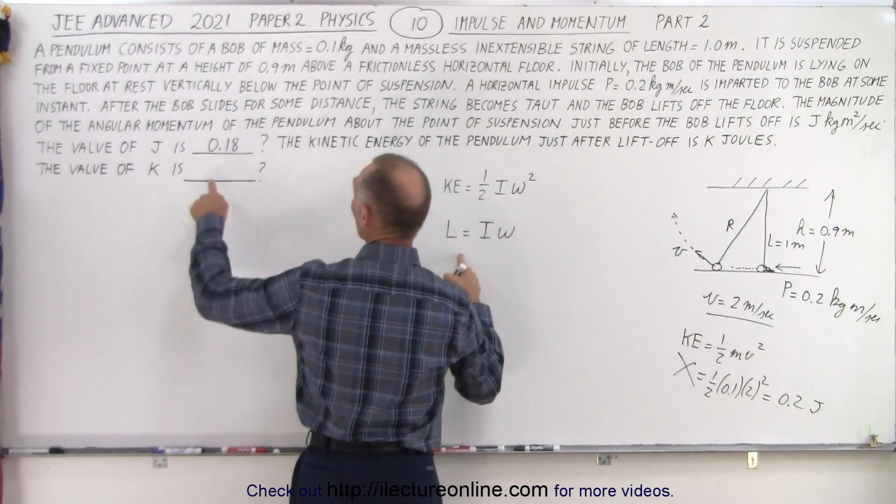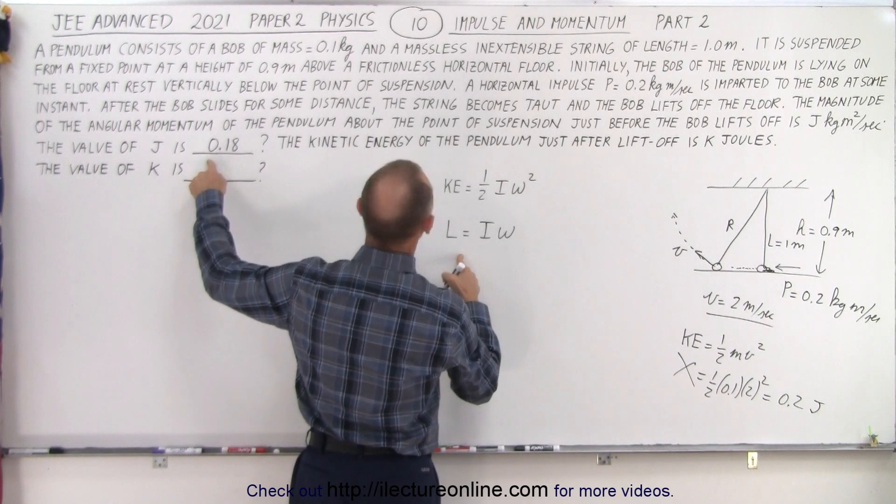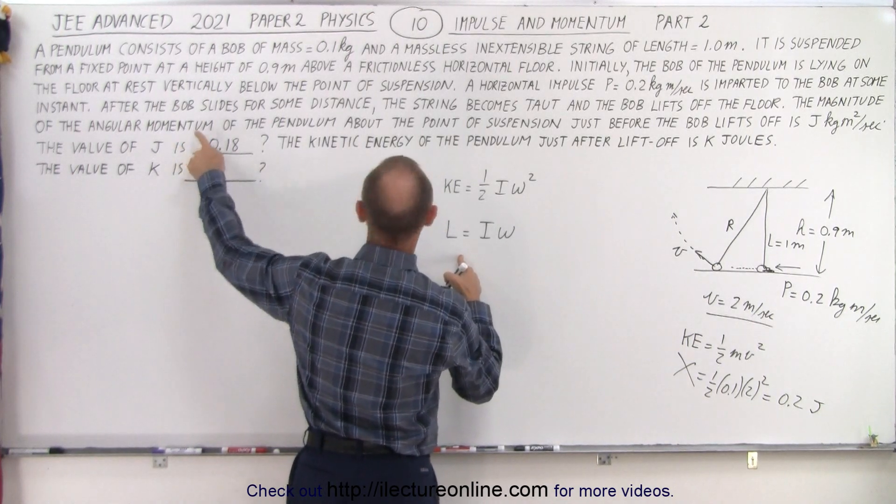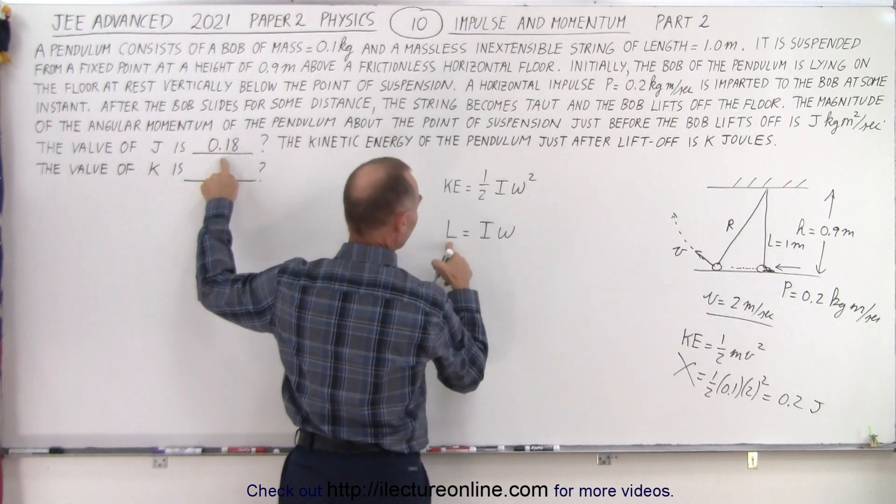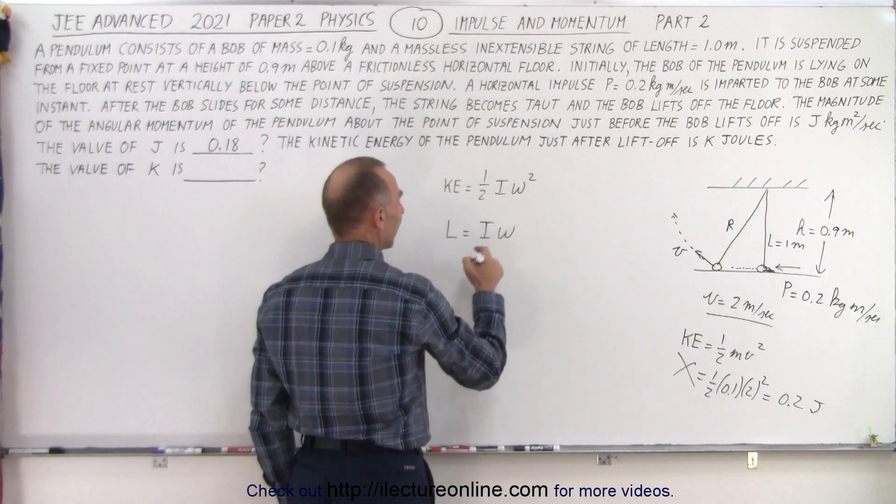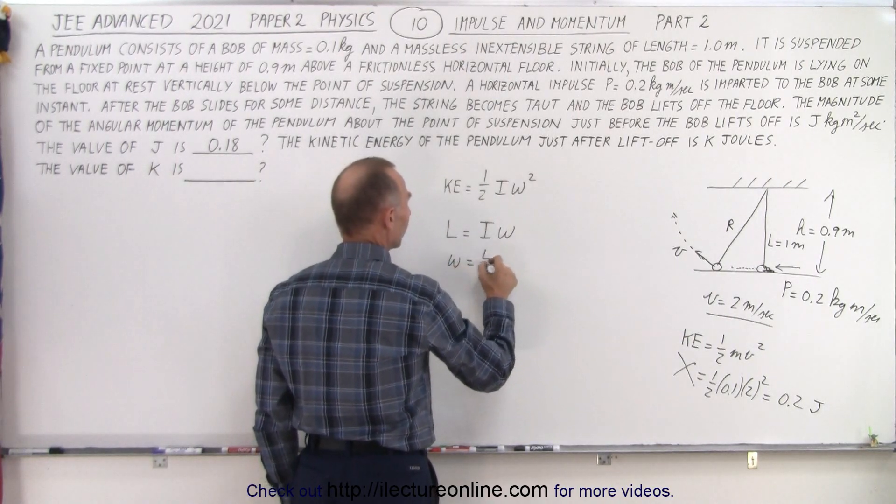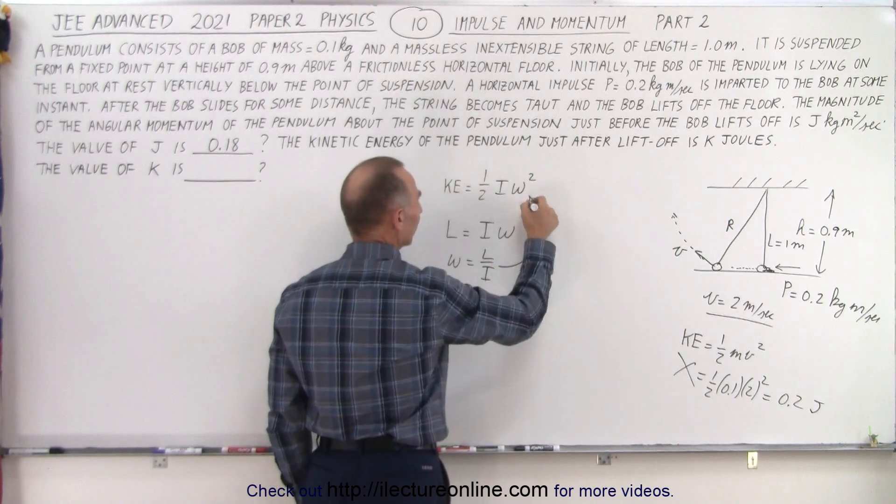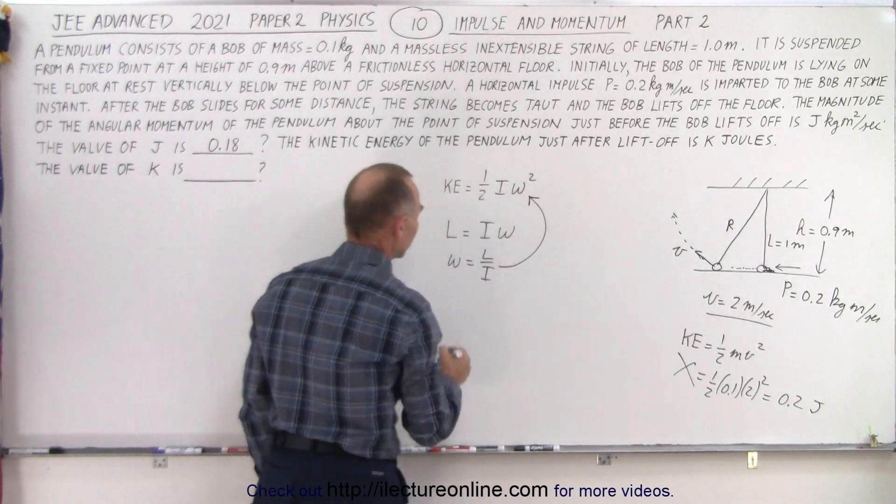And notice that we know what L is. We know the angular momentum, we calculated it as 0.18, so that's a known quantity. We know that I is equal to MR squared, so we can find omega. Omega is equal to L over I, and that can be substituted back in here.